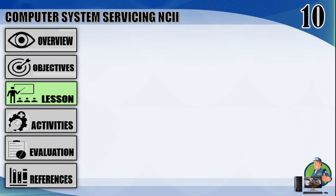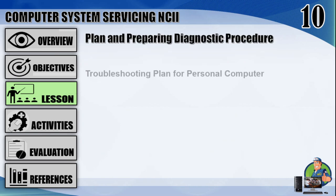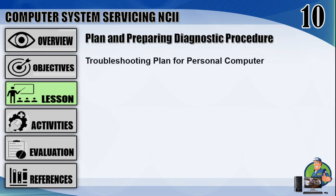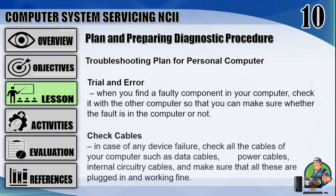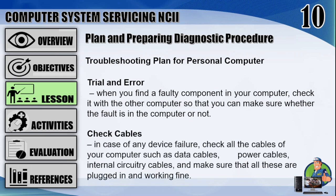Plan and preparing diagnostic procedures — troubleshooting plans for personal computers. Number 1, trial and error: when you find a faulty component in your computer, check it with another computer so that you can make sure whether the fault is in the computer or not. Number 2, check cables: in case of any device failure, check all the cables of your computer such as data cables, power cables, and internal circuitry cables, and make sure that all these are plugged in and working fine.